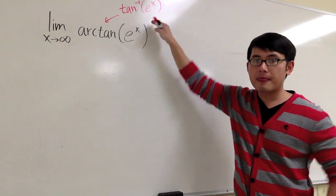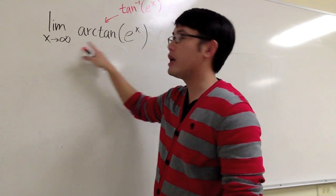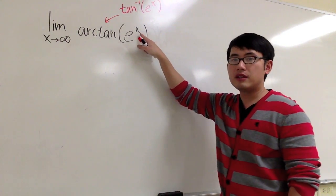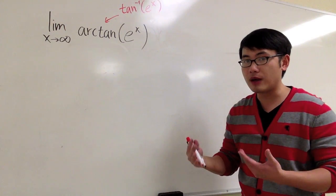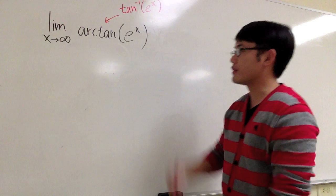So in this situation, what happens is that x is approaching infinity, and the only x is right here. We just have to think about what will happen for e to the x when x goes to infinity, and then we'll go from there.